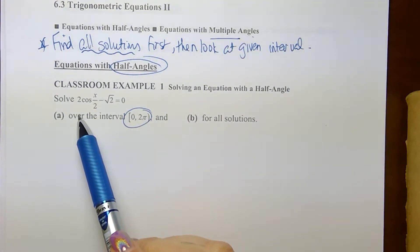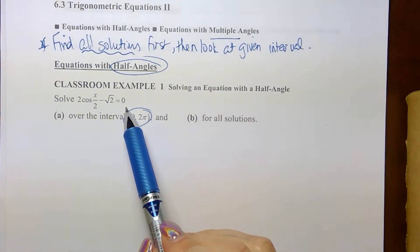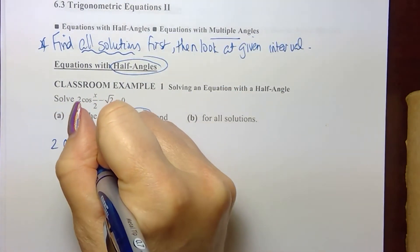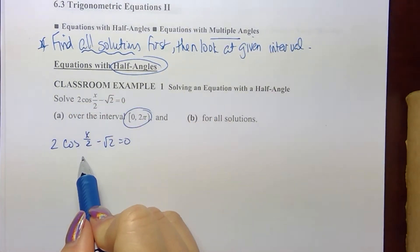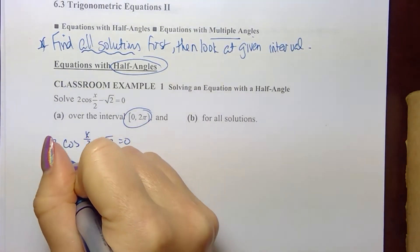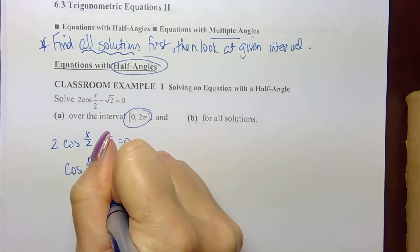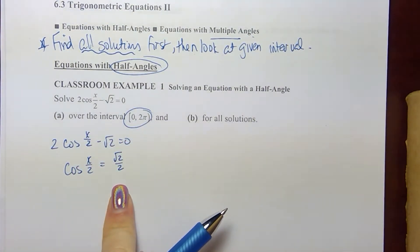Our equation is 2 times the cosine of the half angle minus square root 2 equals 0. So we have 2 cosine of x over 2 minus square root 2 equals 0. I'm going to solve for cosine of x over 2 by moving that square root over and dividing by 2, so that I end up with cosine of the half angle equals square root 2 over 2. That's a value for cosine on our unit circle.